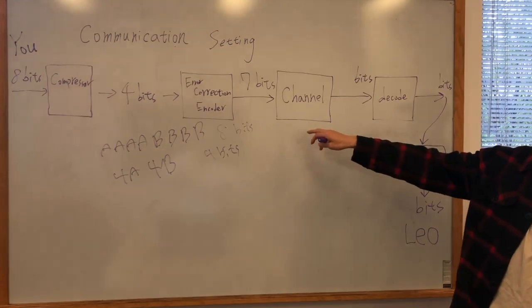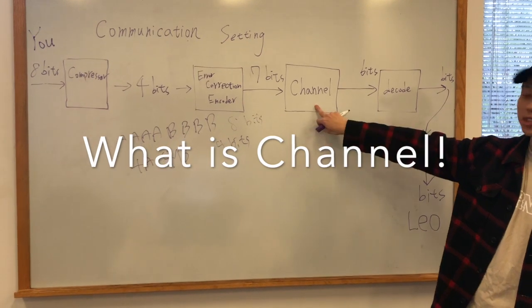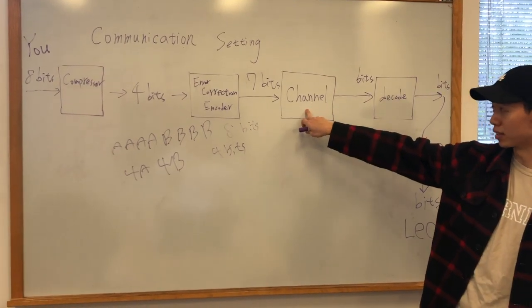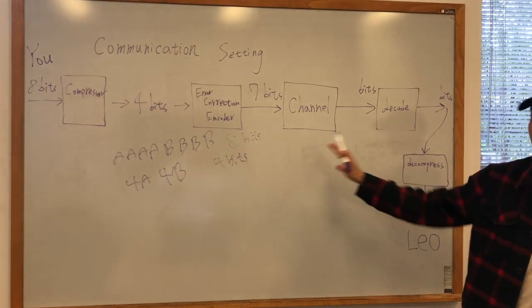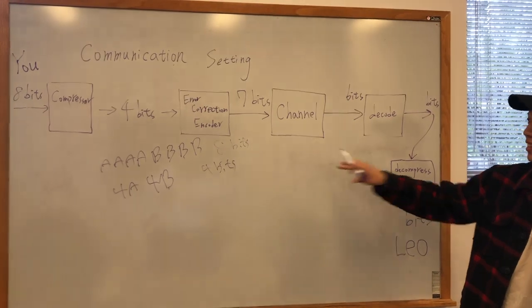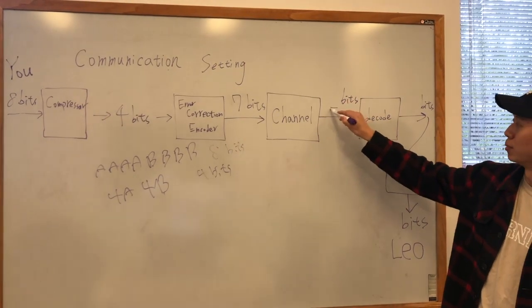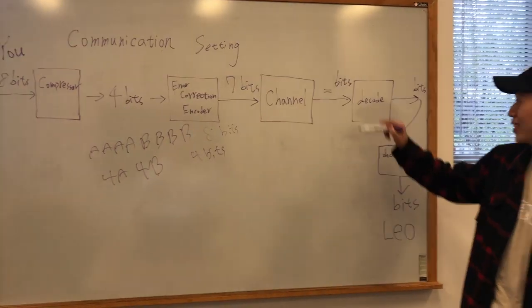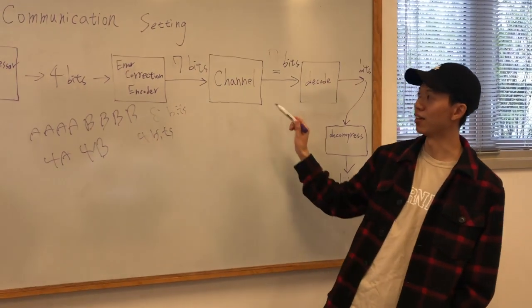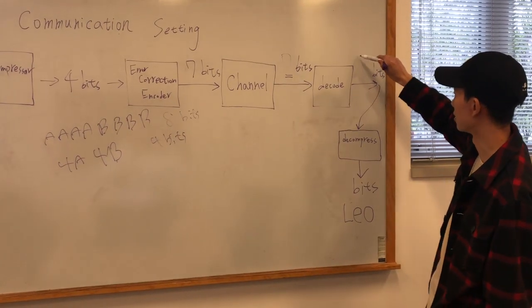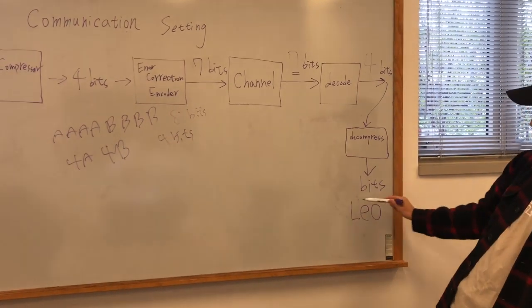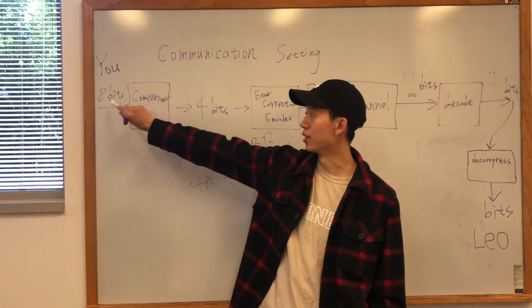So let's begin to explain what these channels are. What's your first impression for channel? Dark, black, can see nothing. Yeah, that's right. Basically the channel is for the uncertainty. This communication setting is basically how to design this channel to let both sides communicate well. What do you think this will be? Seven bits. Yeah, this is seven bits. You can see both sides are really symmetric - this is seven bits, this is four bits, this is also four bits too.